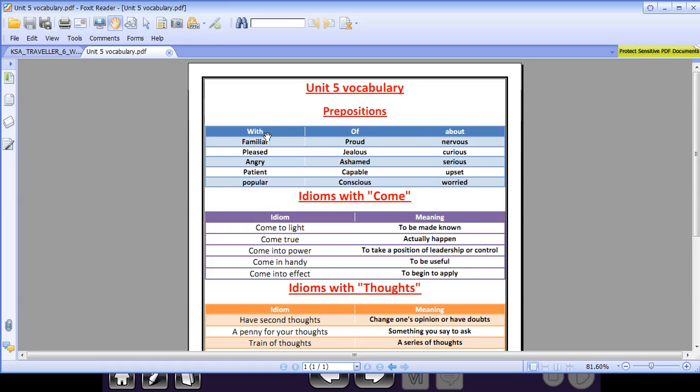Preposition with comes after adjectives like familiar with, pleased with, angry with, patient with, popular with. Then preposition of comes after adjectives like proud of, jealous of, ashamed of, capable of, and conscious of.